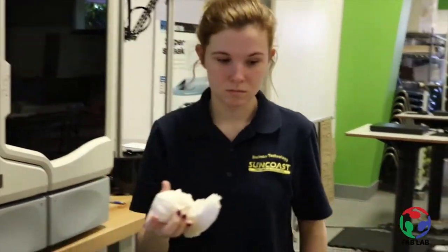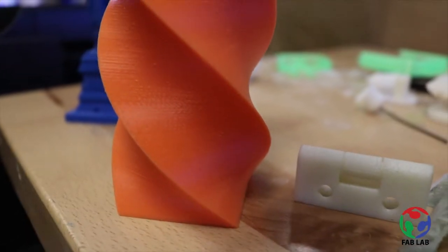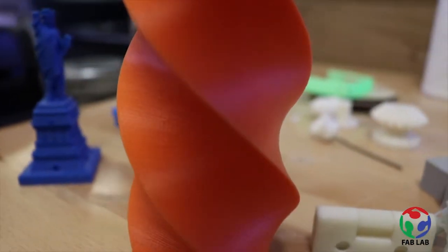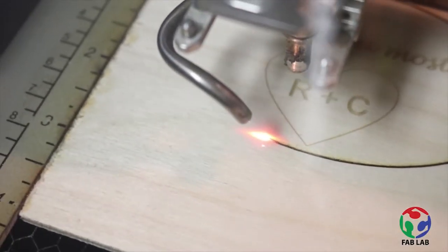So right now we're in the Fab Lab and we have a bunch of machines right here. Some of our most popular machines include the 3D printer, our laser cutter, and our vinyl cutter. On a 3D printer you can create all sorts of different three-dimensional objects. Our vinyl cutter is used primarily for making t-shirts and our laser cutter, you can make anything that you can cut wood with or acrylic.